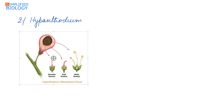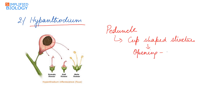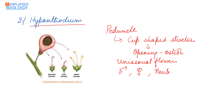Next is hypanthodium. In hypanthodium inflorescence, the peduncle — that is, the stalk of the inflorescence — gets modified into a cup-shaped structure with an opening called the ostiole. Inside the cup-shaped structure develop unisexual flowers of three types: male flowers, female flowers, and some neuter flowers.